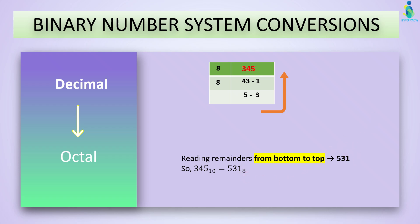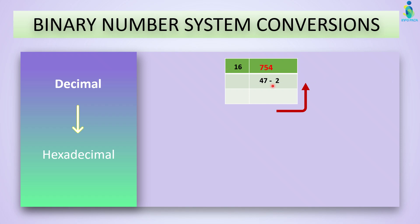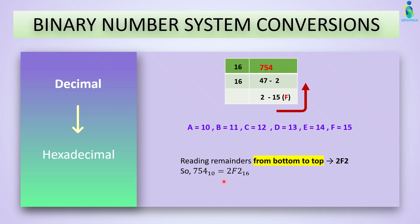Now let's convert from decimal to hexadecimal. We divide the decimal number by 16, the base of hex. The answer is 47, remainder is 2. Divide again — answer is 2, remainder is 15, and we write 15 as F. Reading remainders from bottom to top, the final answer will be 2F2 in hexadecimal.